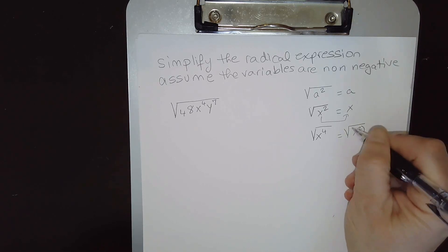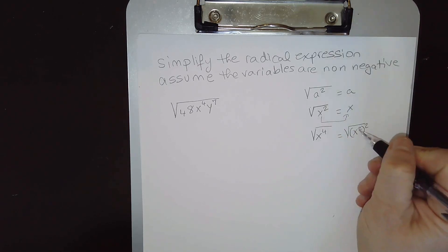You can see it like this. x⁴ is x² squared. This square cancels the square root, and what comes out is x².